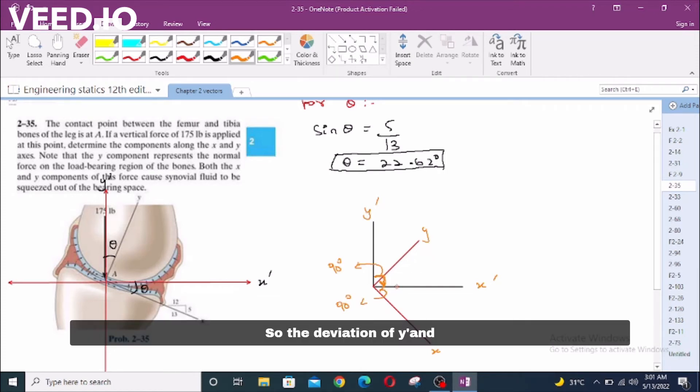So, the deviation of Y Prime and Y equals X Prime and X. That's why these two angles are equal.